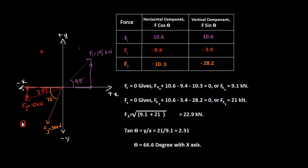The same applies to F3, which also acts in the third quadrant. Its components are in the negative x and negative y directions: the x-component is minus 30 cos 70, which equals minus 10.3 kN, and the y-component is minus 30 sin 70, which equals minus 28.2 kN.